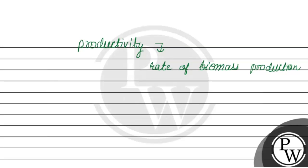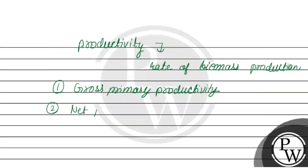Productivity is classified into two types: first is gross primary productivity, and second is net primary productivity. Gross primary productivity of an ecosystem is the rate of production of organic matter during photosynthesis.